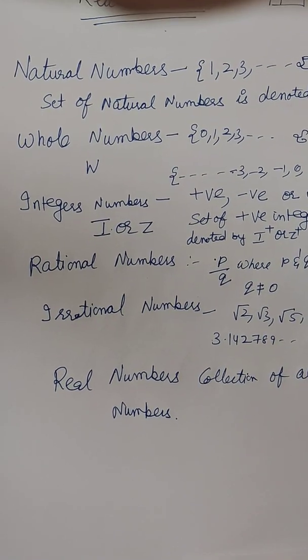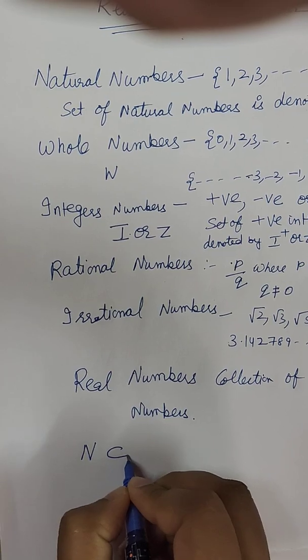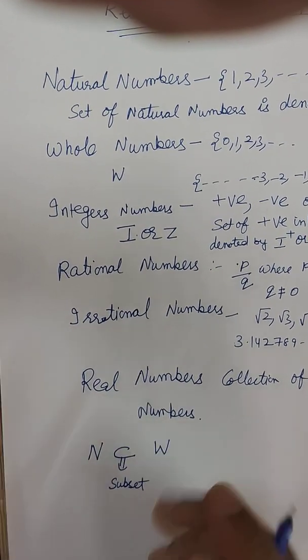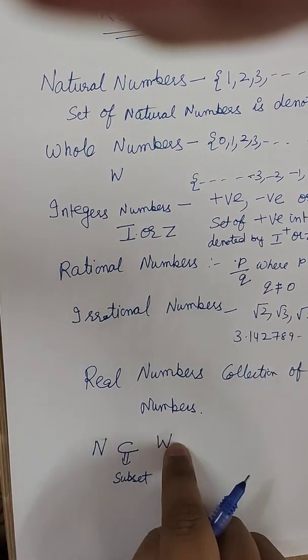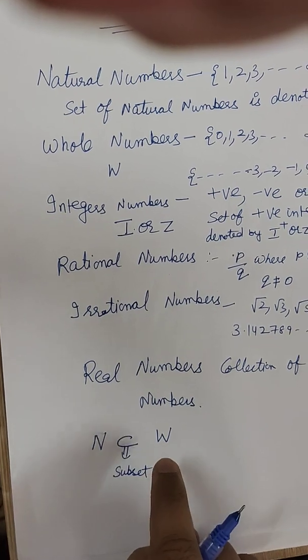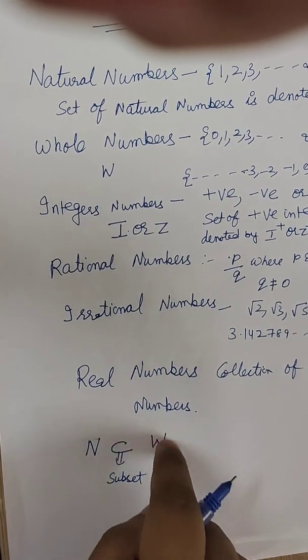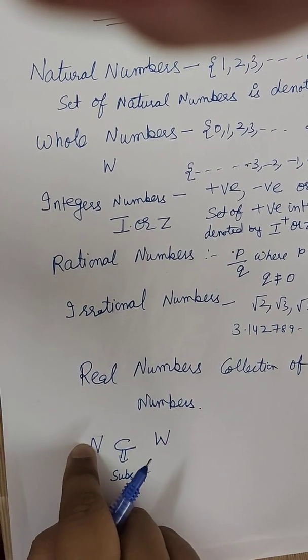Now in mathematical form, how do we write it? We write natural number is subset, this symbol is denoted as subset, subset of whole number. Why subset? Because all the natural numbers are whole numbers. But if I say that all the whole numbers are natural numbers, no, it is false. Because 0 is one that is only whole number, not natural number.